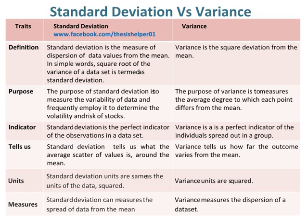Whereas variance is the square deviation from the mean. The purpose of standard deviation is to measure the variability of data and is frequently employed to determine the volatility and risk of stocks. Whereas the purpose of variance is to measure the average degree to which each point differs from the mean.